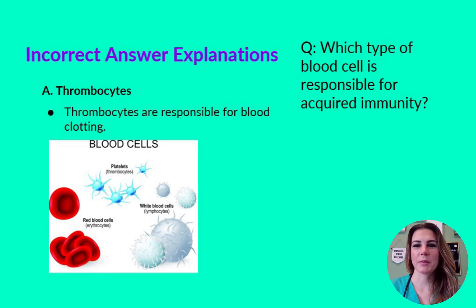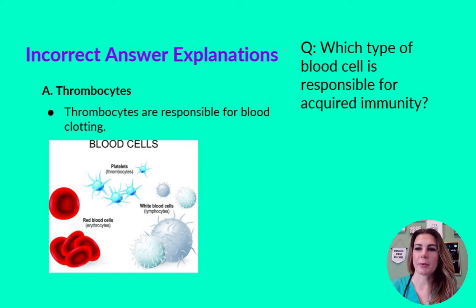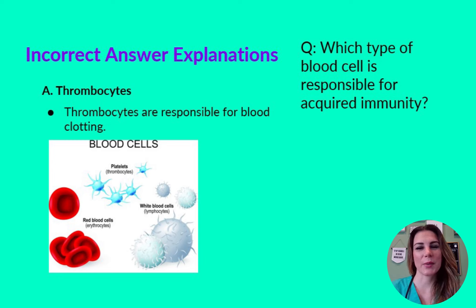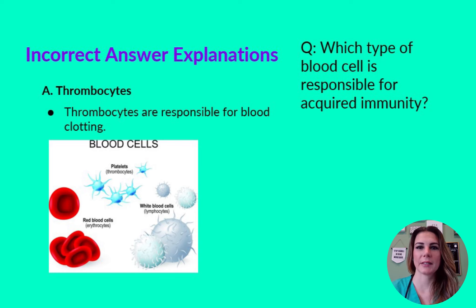Now let's review our incorrect answer options. Thrombocytes — they are responsible for blood clotting. They do not have anything to do with immunity, so we know that A can be eliminated. If you have your flashcards handy and are keeping track of the terms we discuss, you can add thrombocytes to that pack of note cards.